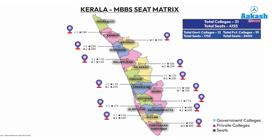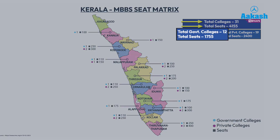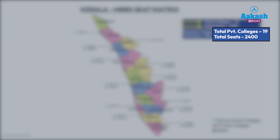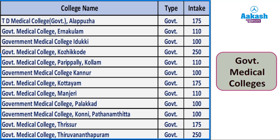For MBBS, the total number of colleges in Kerala state is 31, with a total of 4,155 seats. Out of these, 12 are government medical colleges containing 1,755 seats. The government medical colleges are shown on screen with their respective seat counts, giving you an idea of how to fill your preference choices.